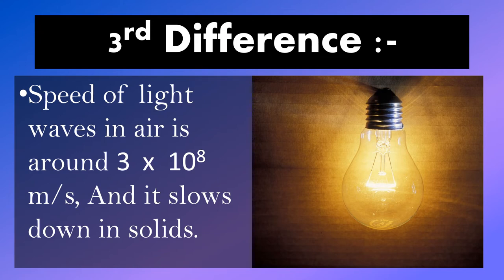Let's look at the third difference between light and sound waves. The speed of light waves in air is around 3 × 10⁸ meters per second, and it slows down in solids.